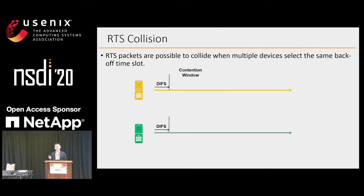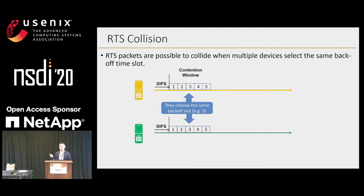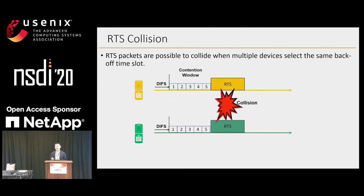But how about the backoff field? Actually, if two devices choose the same random backoff, like backoff value five, the following two RTS will collide. And how can we figure out this problem?